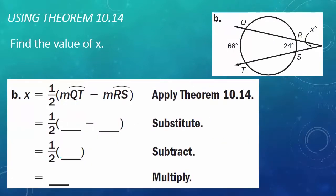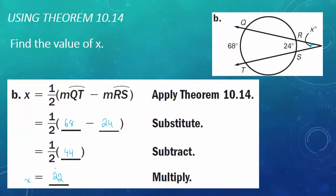Part B: Find the value of X. This time we have two secants intersecting outside of the circle. The measure of the angle equals one-half (arc QT minus arc RS). So X equals one-half of (68 minus 24). 68 minus 24 is 44, and one-half of 44 is 22. So the measure of X is 22 degrees.